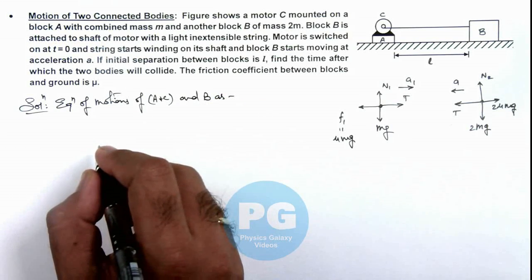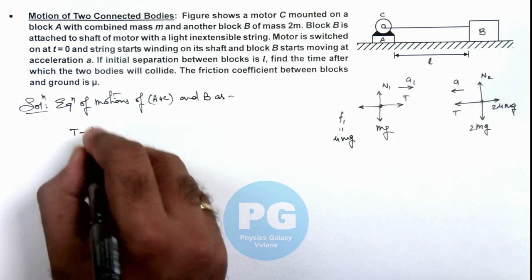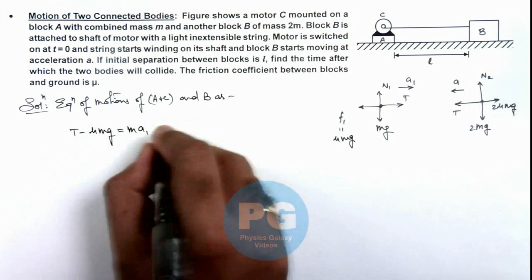Here we can write for this A plus C the equation of motion we can write T minus μmg is equal to ma1. This is say our first equation.